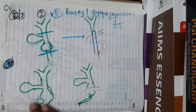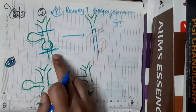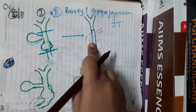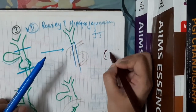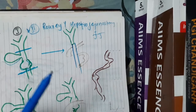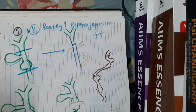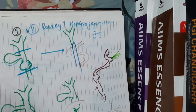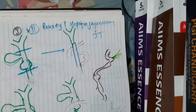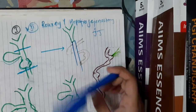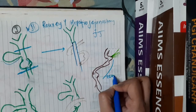To understand the Roux-en-Y technique, we identify the duodenum and the ligament of Treitz, which is attached to the third to fourth part of the duodenum. From the ligament of Treitz, we count 75 centimeters of jejunum.